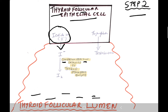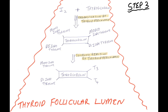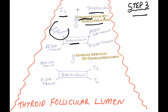Step 2: Iodide ions enter the thyroid follicular lumen and undergo an oxidation reaction catalyzed by thyroid peroxidase enzyme to give rise to iodine. Thyroglobulin also enters the thyroid follicular lumen.